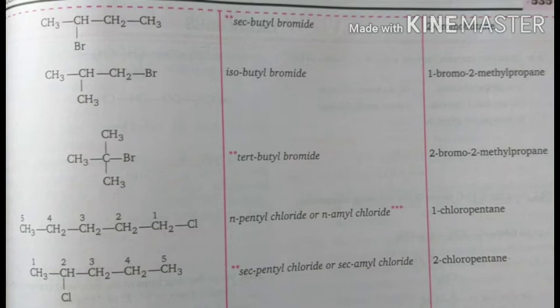Another example: secondary butyl bromide, CH3CHBrCH2CH3, has the IUPAC name 2-bromobutane. Second is isobutyl bromide, which is 1-bromo-2-methylpropane. Third is tertiary butyl bromide, which is 2-bromo-2-methylpropane. These are examples of haloalkanes with their IUPAC names.